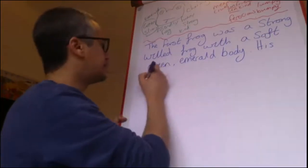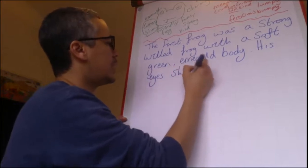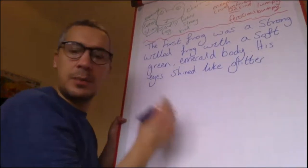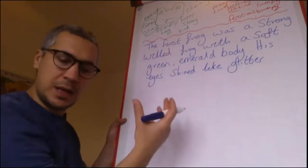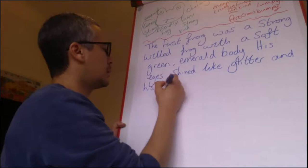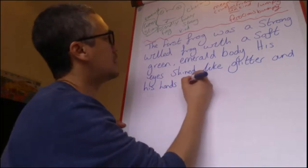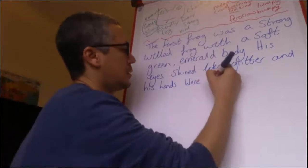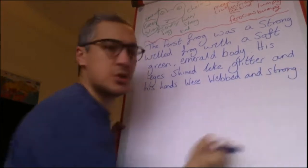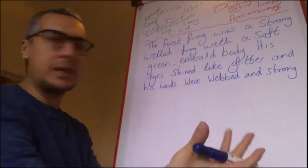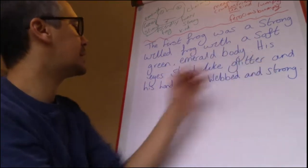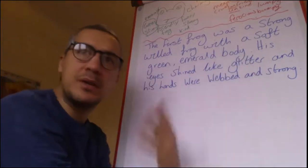'The first frog was a strong-willed frog with a soft, green, emerald body.' I've got inside words and outside words there — strong-willed is inside, and soft green emerald body is outside. Then 'his eyes shined like glitter' — there's my simile, comparing one thing to another. 'And his hands were webbed and strong.' So we've got soft green emerald body, eyes shined like glitter, and hands webbed and strong — you're getting a bit of an image of what this frog looks like.